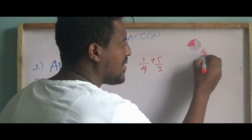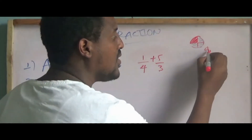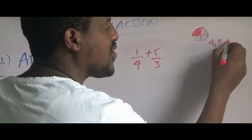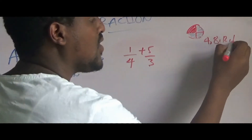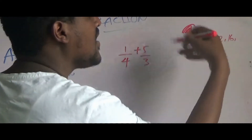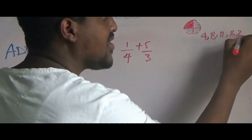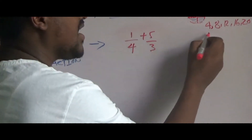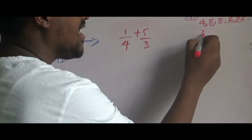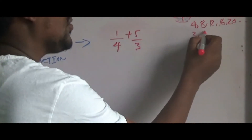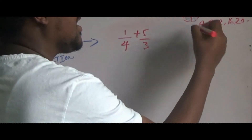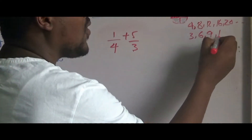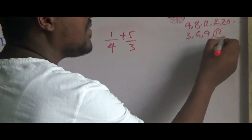4 times 1 is 4, 4 times 2 is 8, 4 times 3 is 12, 4 times 4 is 16, 4 times 5 is 20. 3 times 1 is 3, 3 times 2 is 6, 3 times 3 is 9, 3 times 4 is 12.